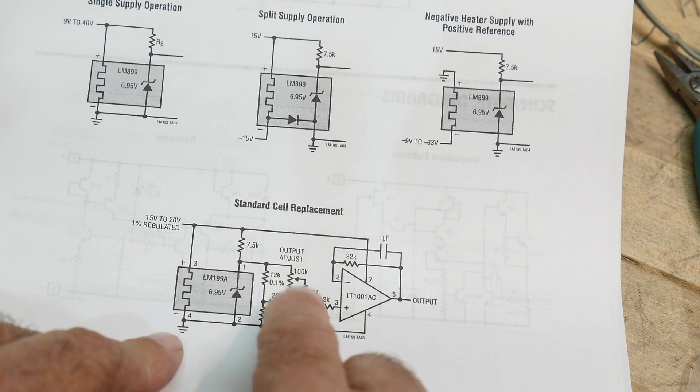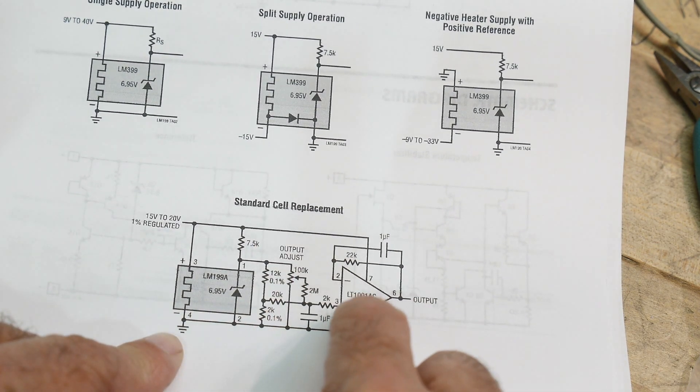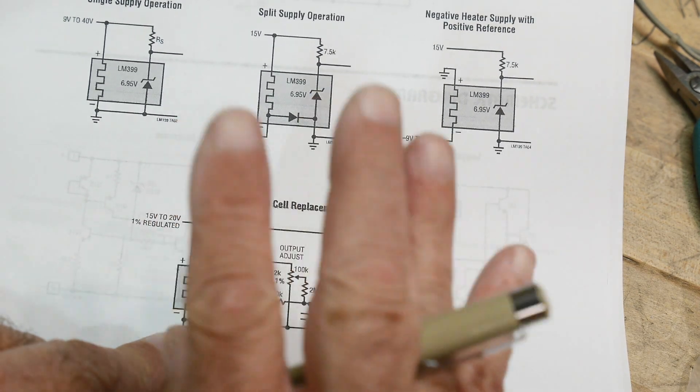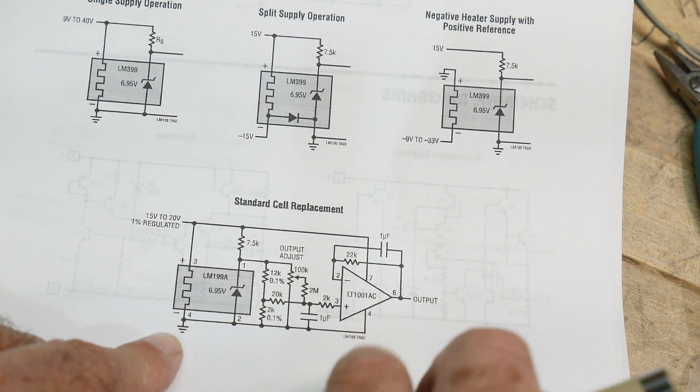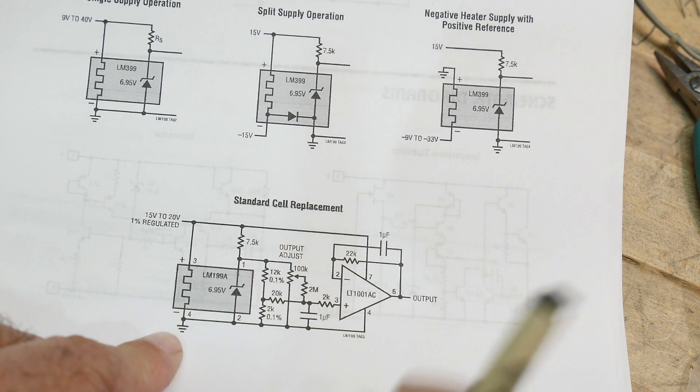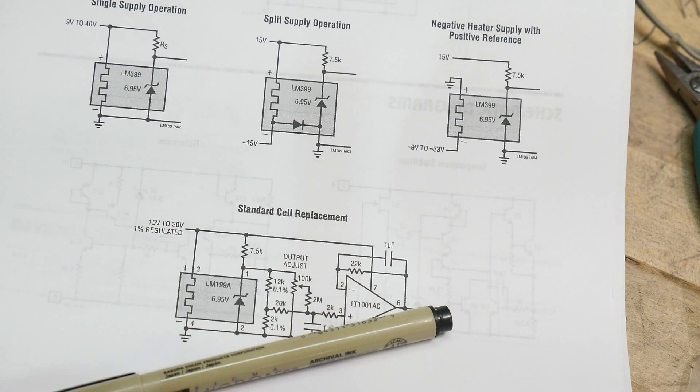Then you can do fancy stuff like this standard cell replacement. It has a nice little section here to tweak the voltage very accurately and some type of buffers. You don't really want to use the output of the zener diode without buffering it. You really want to buffer it before it goes out. But today we're just going to grab pin one and measure it.